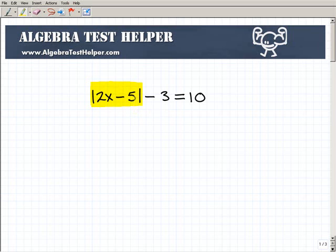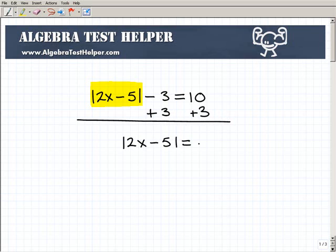So you can kind of think to yourself, well, it's almost like solving for this part of the equation. So what I need to do is get rid of this 3 next to it. That's pretty easy. All I need to do is just add 3 to both sides of the equation. And I can get that absolute value part all by itself. So what you get is the absolute value of 2x minus 5 is equal to 13.